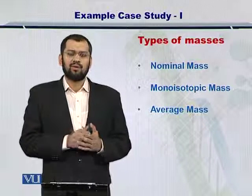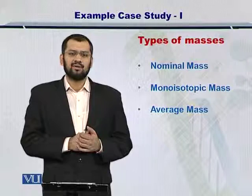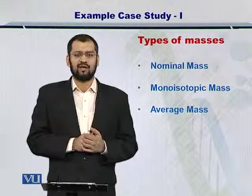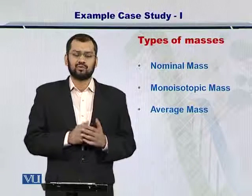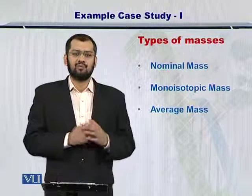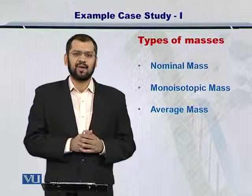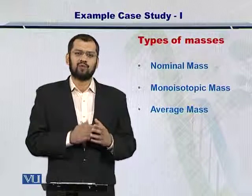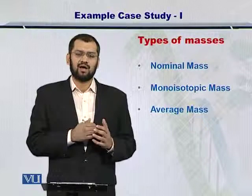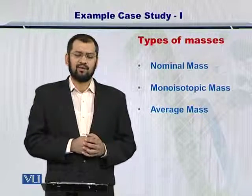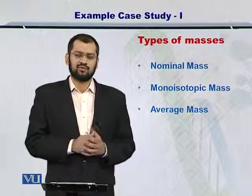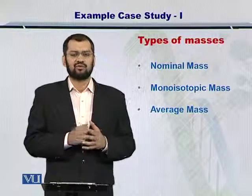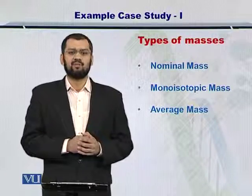However, in mass spectrometry based proteomics, we will be using the monoisotopic mass. Just to remind you, the monoisotopic mass is the mass of the most abundant isotope — which in the case of carbon is 12, and in the case of hydrogen is 1.